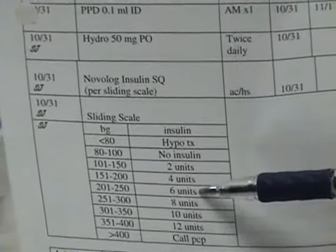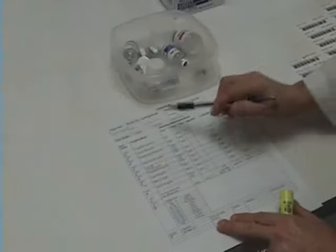Then I'm going to come over to my sliding scale, and that means my patient's going to get six units of insulin, and you're going to write the six units right here where it says units.